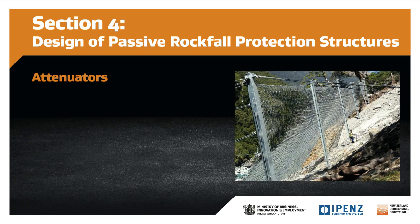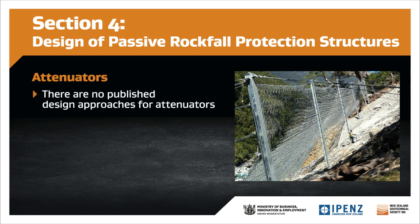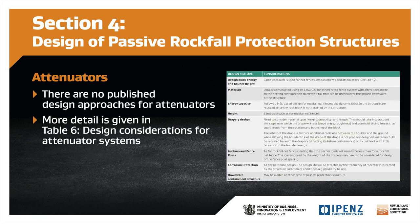Lastly, attenuators are flexible fence systems that dissipate the energy of falling rocks rather than stop them. They may be used in conjunction with other barrier systems located downslope. At present, there are no published design approaches for attenuators. Their design is based on empirical methods developed from limited field testing and observation, as detailed in Table 6. Because attenuators do not stop rocks, they are subjected to lower loads than a flexible barrier and therefore may be sized accordingly.